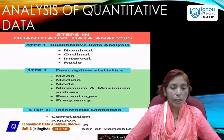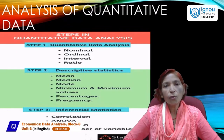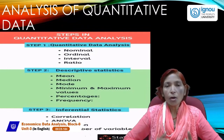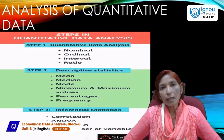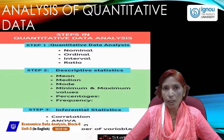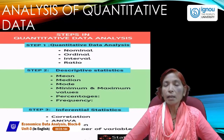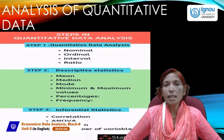Regression tells us the cause and effect relationship. Correlation only explains the relationship between two or more variables — nothing beyond that. But regression tells us the cause and effect relationship. For example, what are the main causes of inflation? Inflation means a continuous rise in price. It occurs due to increase in money supply, deficit financing by government, and decrease in agricultural production.